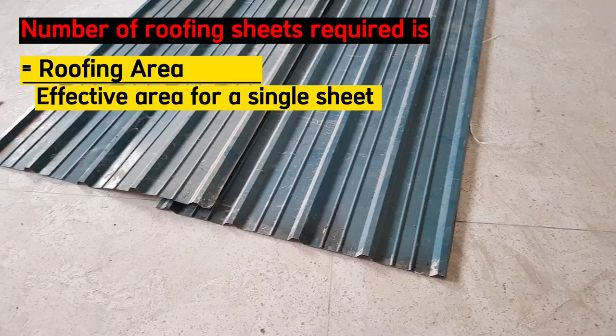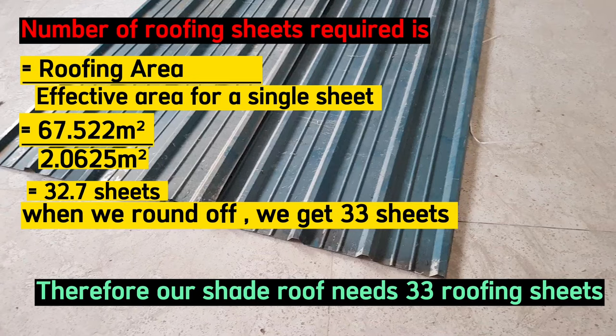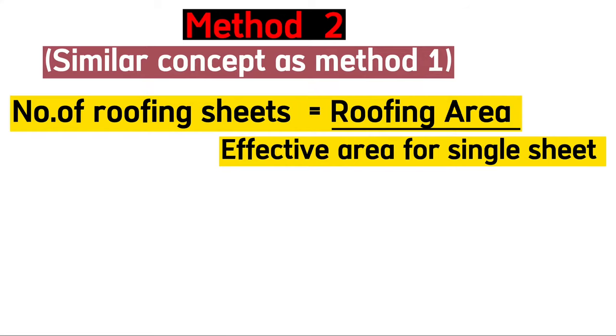The number of roofing sheets required = roofing area ÷ effective area per sheet = 67.522 m² ÷ 2.0625 m² = 32.7, which rounds up to 33 sheets. Therefore our shed roof needs 33 roofing sheets. For the hip roof method, the concept is also quite simple: we get the roof area and divide it by the effective area for a single sheet.